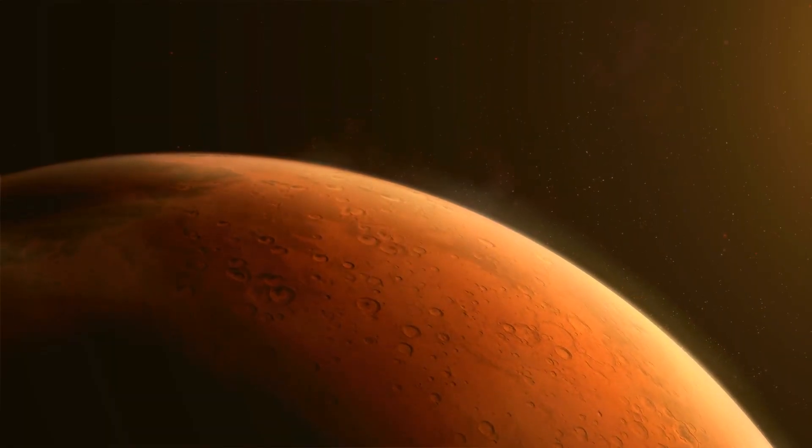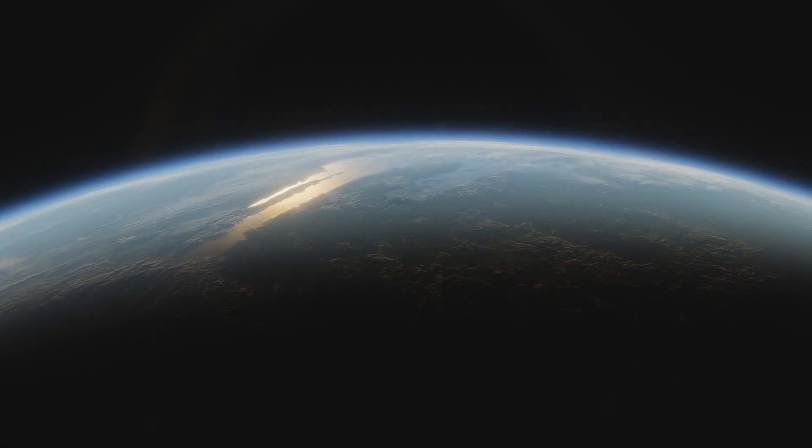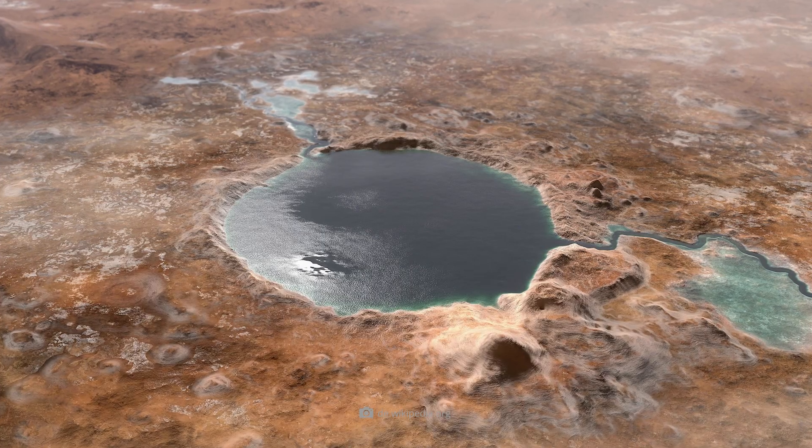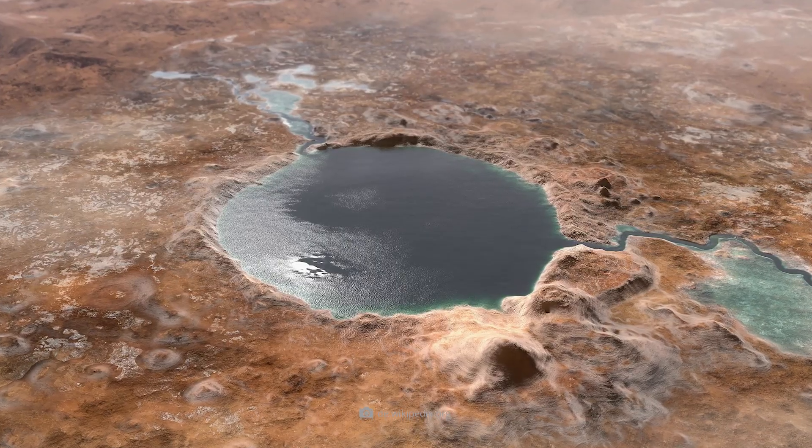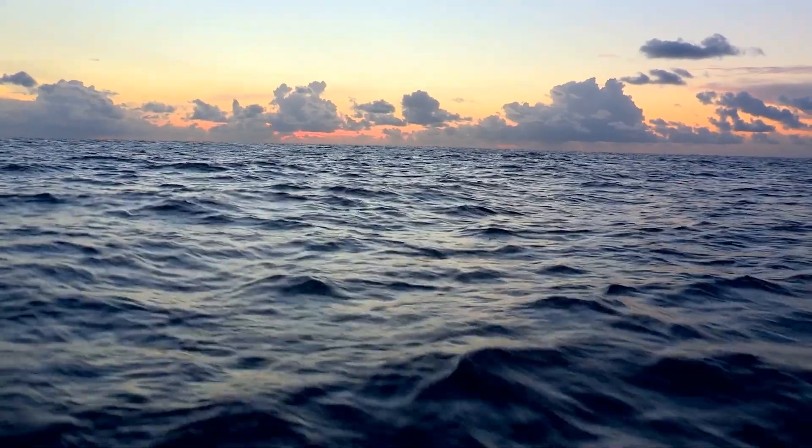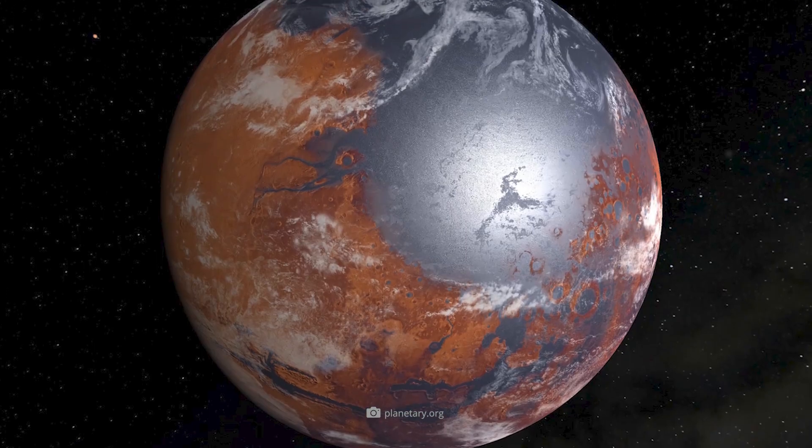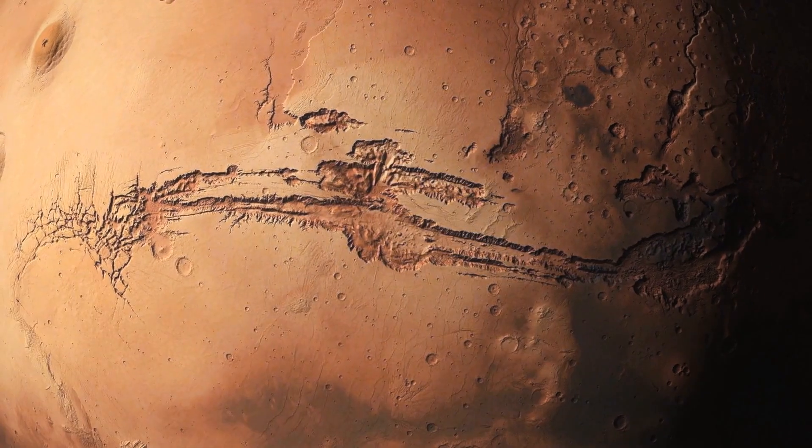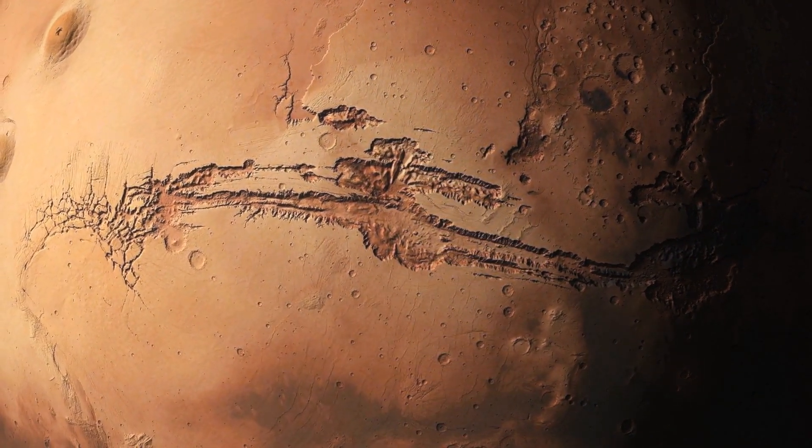In fact, today's Martian atmosphere has only a fraction of its former density. The situation was completely different more than 3 billion years ago. It is very likely that the surface of the planet was adorned by many rivers, lakes, and even enormous oceans at that time. Some experts even assume that the aquasphere once covered more than 70% of the Martian surface. Presumably, the last meltwater streams on the red planet dried up about 200,000 years ago.